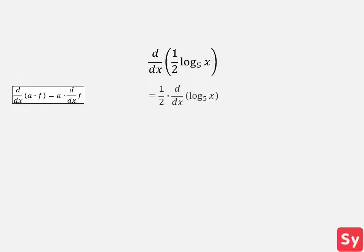Let's see our first example. We want to compute the derivative of one-half times log base 5 of x. First, we will use the multiplication by a constant rule and pull out the one-half. Next, we want to compute the derivative of log base 5 of x. We will recall the derivative of log base a of x and plug in 5 for a.